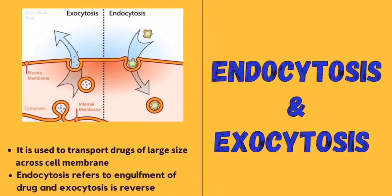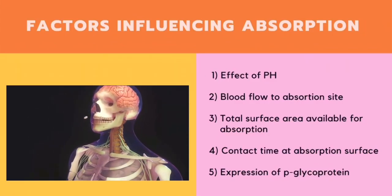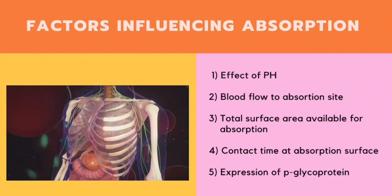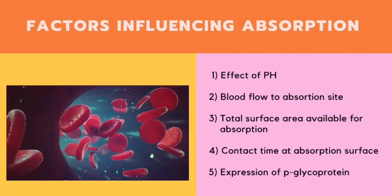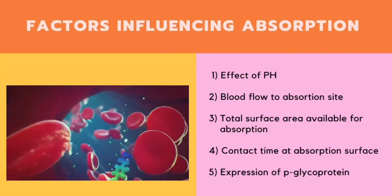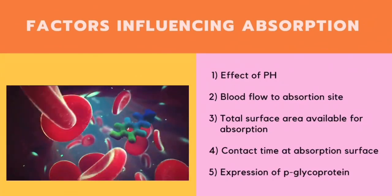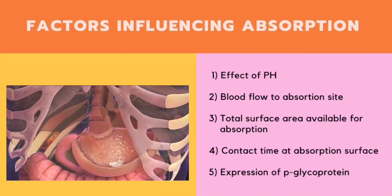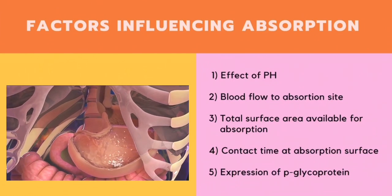Active transport is an energy-dependent process, and the energy is derived from ATP. The last process is endocytosis and exocytosis, which are used to transport large-sized drugs across the cell membrane. Endocytosis refers to the engulfment of the drug, while exocytosis is the reverse. Next, the five factors that influence absorption are: effect of pH of the drug, blood flow to the absorption site which is the small intestine, total surface area available for absorption, contact time at the absorption surface, and the effect of P-glycoprotein.